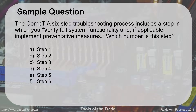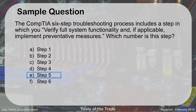Here's a sample exam question: using the six-step troubleshooting process, at what step do you verify full system functionality and, if applicable, implement preventive measures? The answer is step five. You may also get questions like: what comes after verifying full system functionality and implementing preventive measures? That would be step six — documenting your outcomes. So make sure you have a good understanding of the order of the six steps, both what comes next and what comes before.